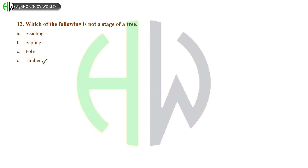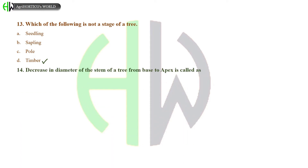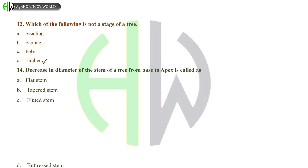Decrease in diameter of the stem of a tree from base to apex is called as: Flat stem, Tapered stem, Fluted stem, or Buttressed stem? And the correct answer is Tapered stem.